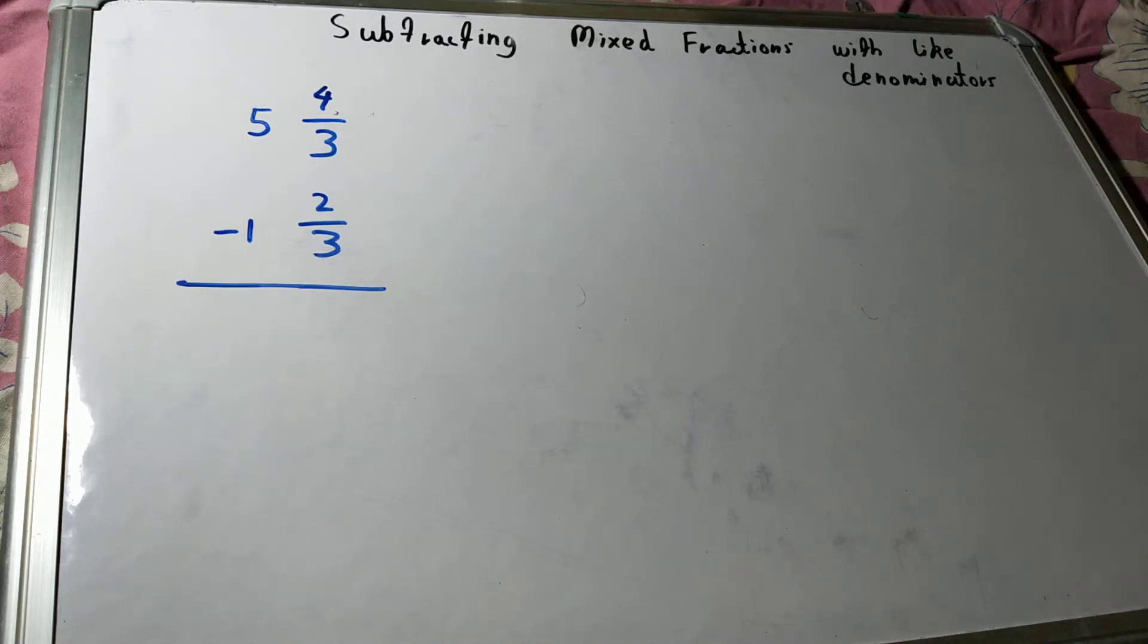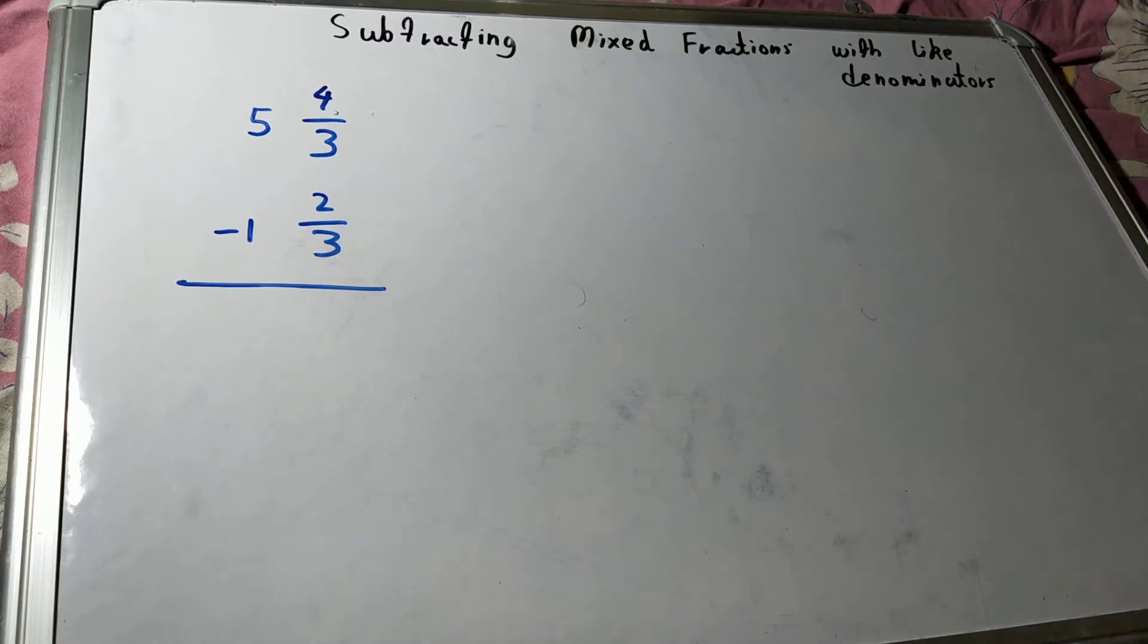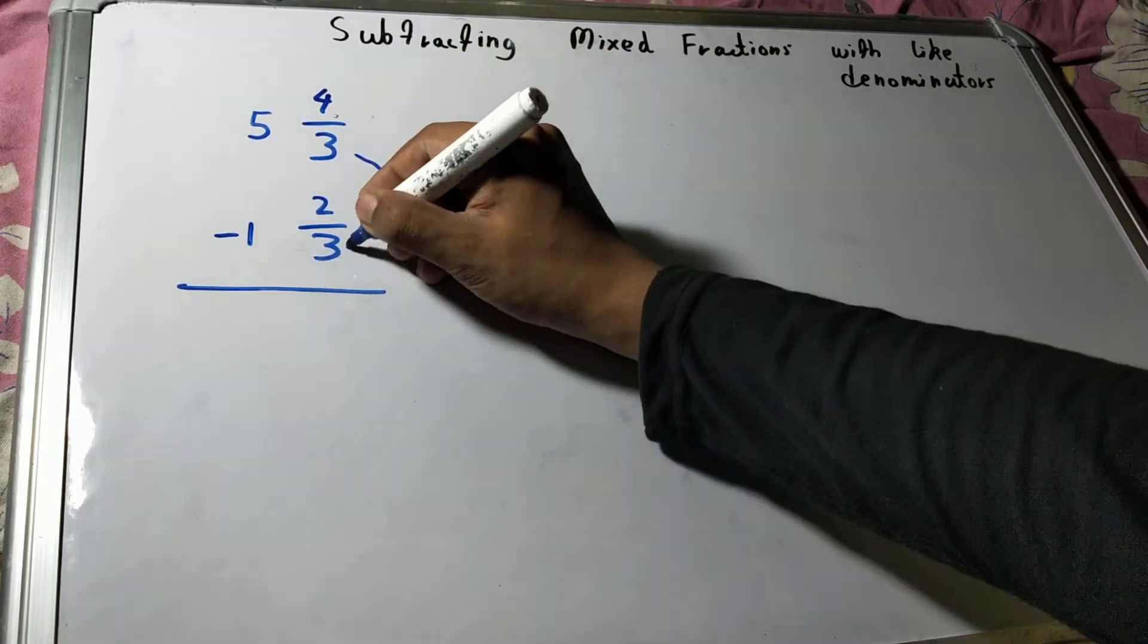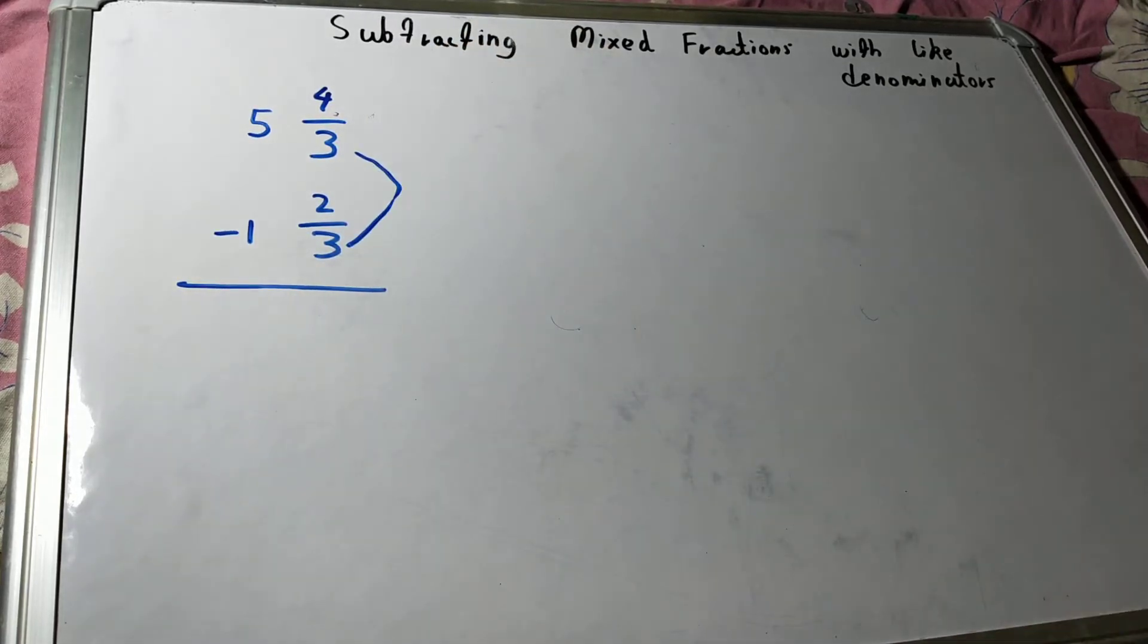Hello friends, and in this video I will be helping you with how to subtract fractions with like denominators. So let's start. By like denominator, I mean that in both the mixed fractions the denominator value is the same, that is 3 and 3.